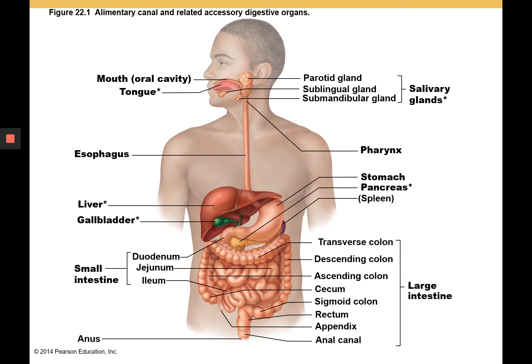Here we can see parts of the small intestine — the duodenum, jejunum, and ileum. The duodenum is this short part attached to the stomach, and the jejunum and ileum are in here. The ileum meets up with the first part of the large intestine, the cecum, and that's where we find the ileocecal valve.